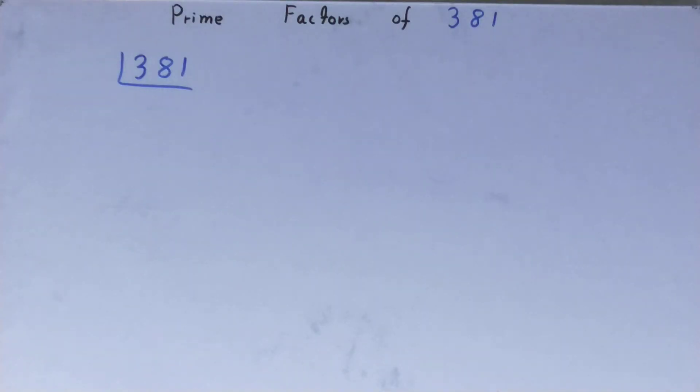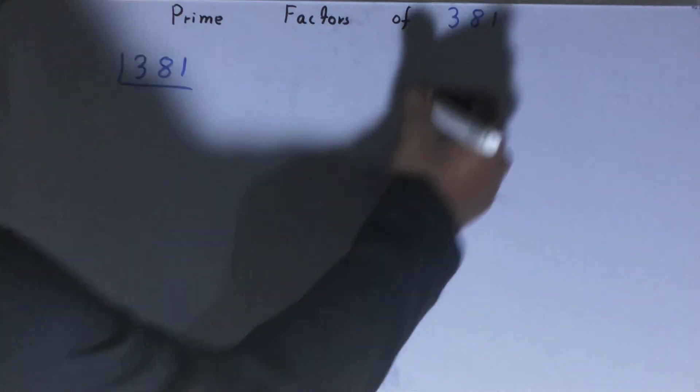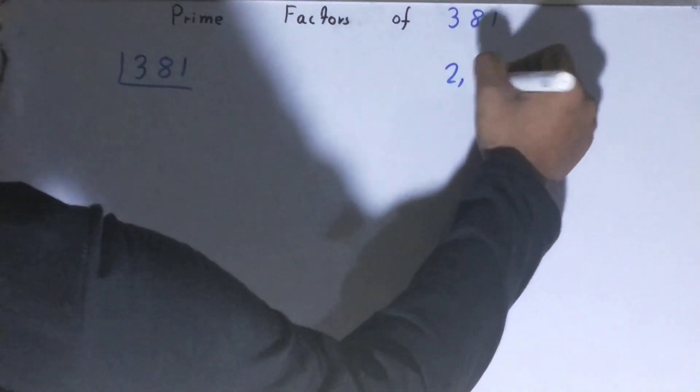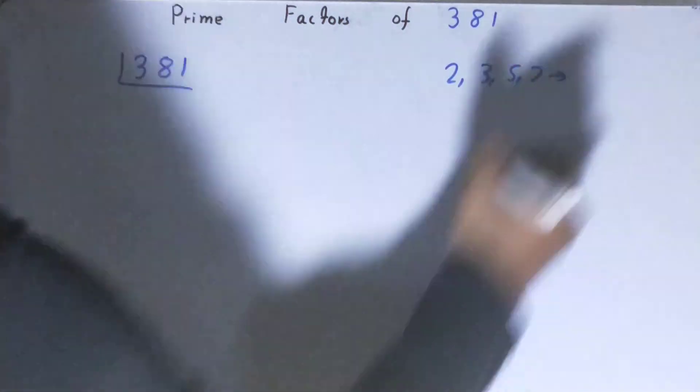Before solving this, you must have an idea about what prime numbers are. Prime numbers are numbers that are divisible by 1 and the number itself, like 2, 3, 5, 7, and so on.